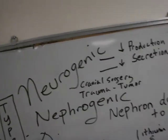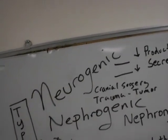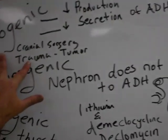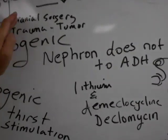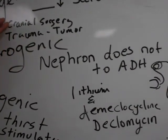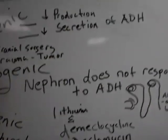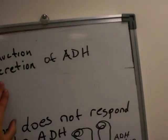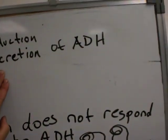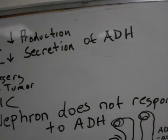Another type is neurogenic. Neurogenic means the origin is somewhere in the head — maybe the patient had cranial surgery or trauma. What happens here is a decreased production or secretion of antidiuretic hormone.